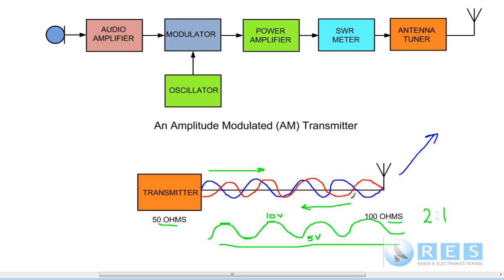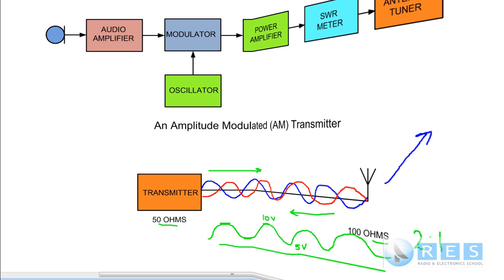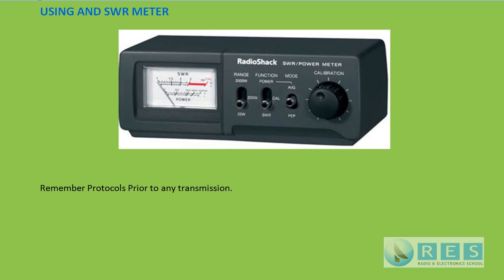An acceptable standing wave ratio is 1.5 to 1. It's a fool's errand to try and reduce the standing wave lower than that, because the difference between 1.5 to 1 and 1 is almost nothing. We need to measure SWR to determine the match between the transmitter, which is nominally 50 ohms, and the antenna. If the SWR is very high it means we are going to have extra losses in our antenna system, or there could even be a fault in our antenna system — so it's very much to our advantage to know what the SWR of our antenna is.